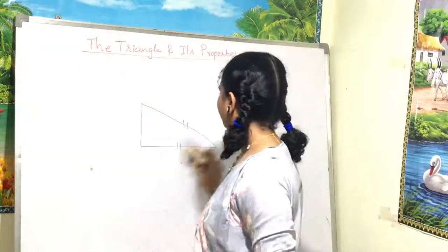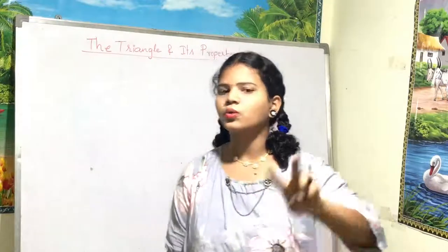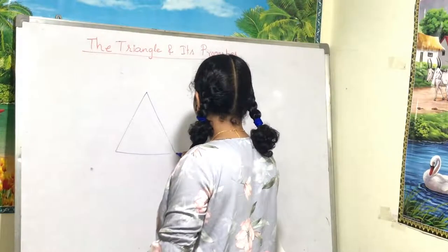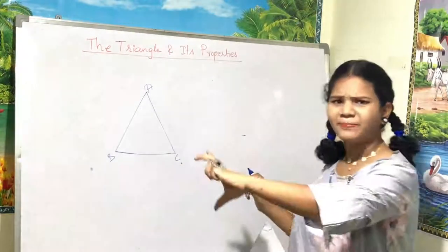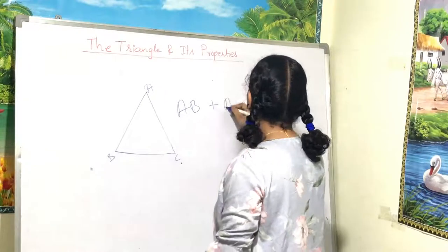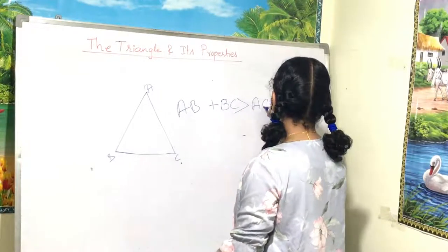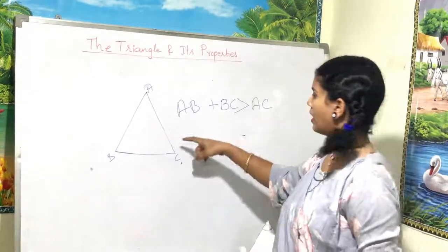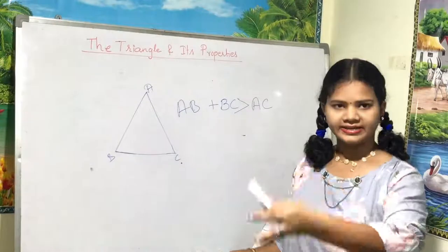Next is the property about the sum of the lengths of two sides of a triangle. In triangle ABC: AB plus BC is greater than AC. So the sum of any two sides is greater than the third side. This is a simple but important property.